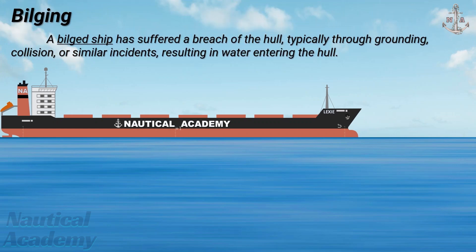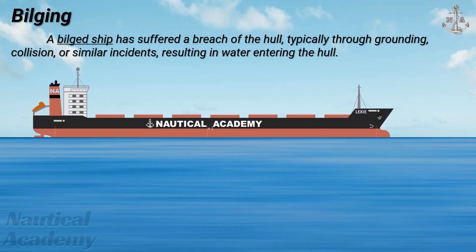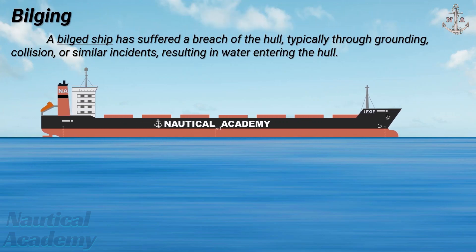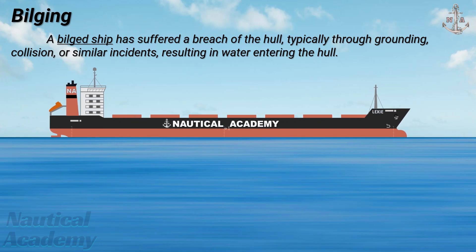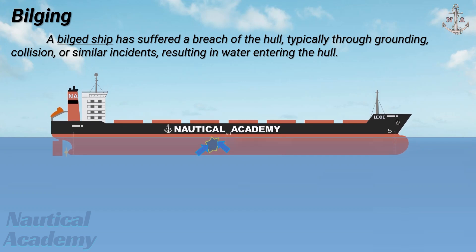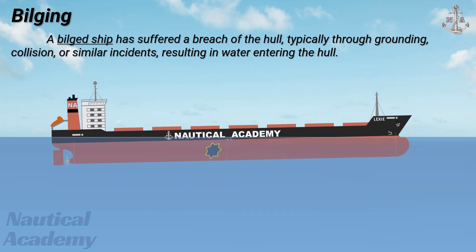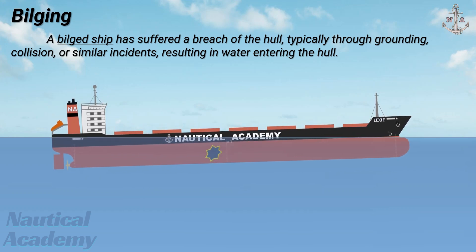A bilged ship is one that has suffered a breach of the hull, typically through grounding, collision, or similar incidents, resulting in water entering the hull. When a ship sustains damage leading to the flooding of compartments, an increase in draft will always occur. However, this does not necessarily mean that the ship's initial stability will decrease.